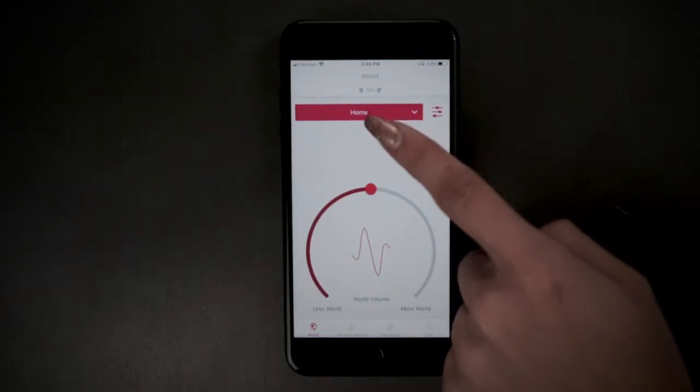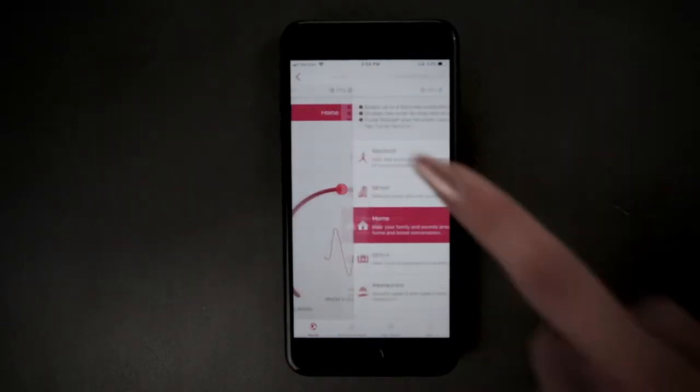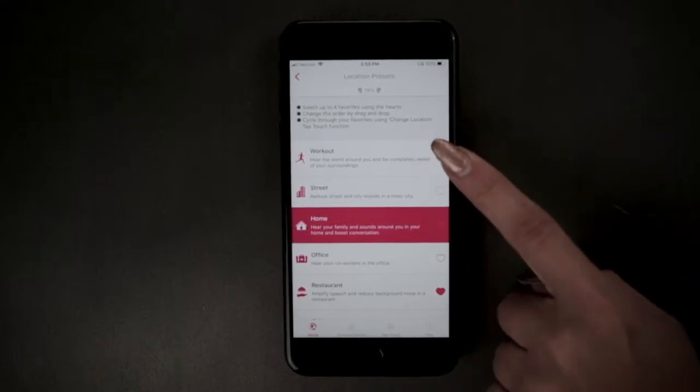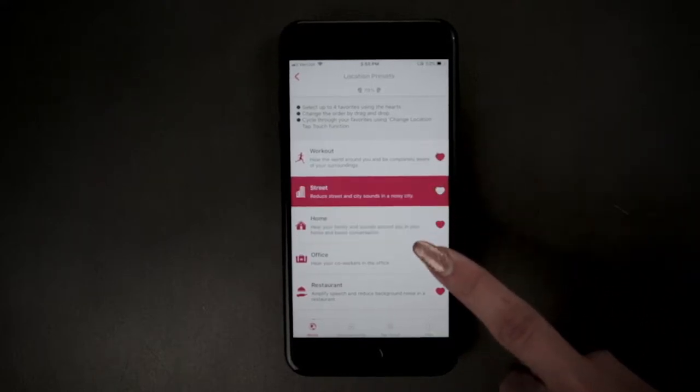You can tap on the bar and it will take you to the location presets screen. You can choose four favorite presets by clicking the heart icon for each of your preferred locations.